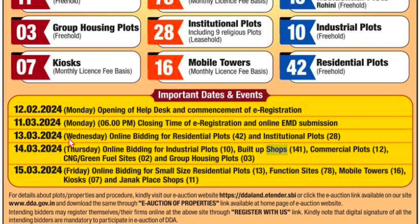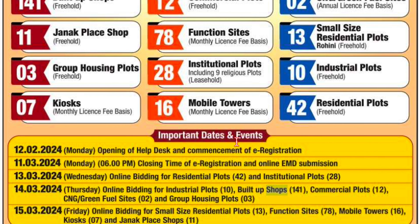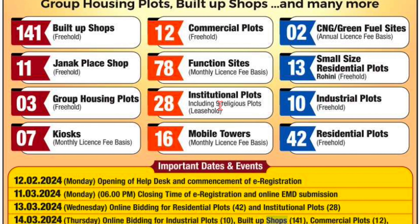The live e-auction will be conducted from 13th to 15th March for different segments. On 13th March they're conducting the auction for residential plots and institutional plots. On 14th March for industrial plots, built-up shops, commercial plots, green fuel sites, and group housing plots. On 15th March for small-size residential plots, function sites, mobile towers, and Janakpuri shops.